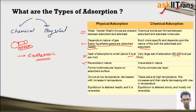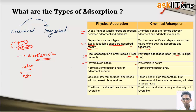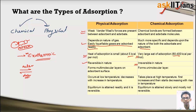Physical adsorption is reversible in nature — there are two opposing processes, adsorption and desorption, making it reversible. Chemical adsorption, however, is irreversible in nature. Once the chemical bonds are formed between the adsorbate and adsorbent molecules, they cannot be broken down again. And if they are broken down, the properties get changed. So, chemical adsorption is irreversible because of the formation of chemical bonds.